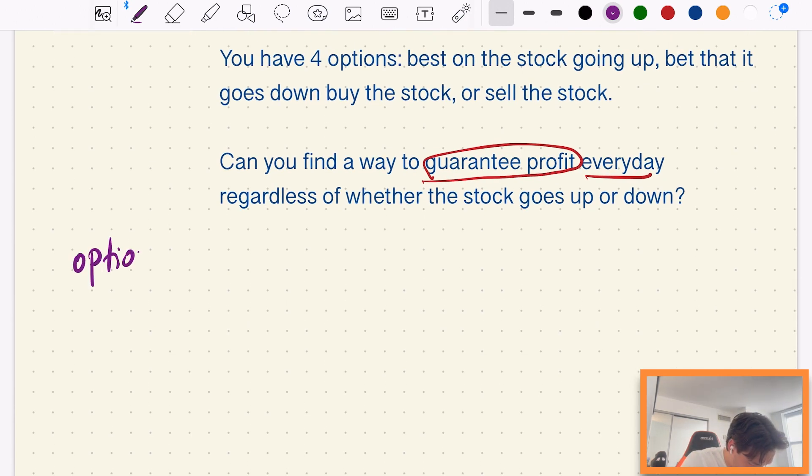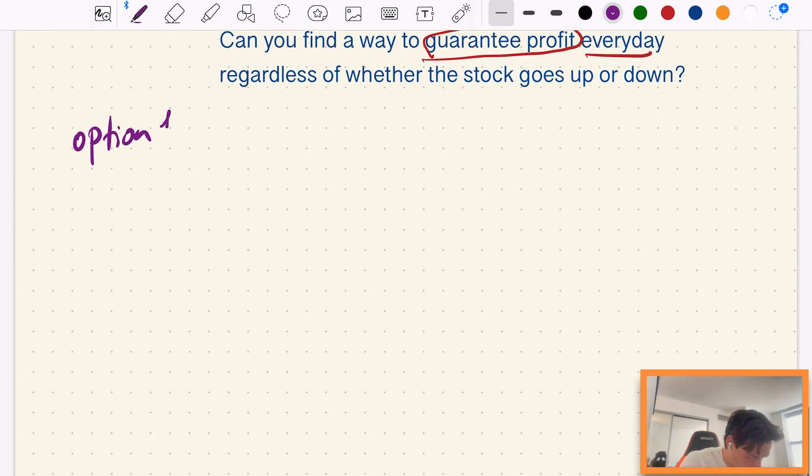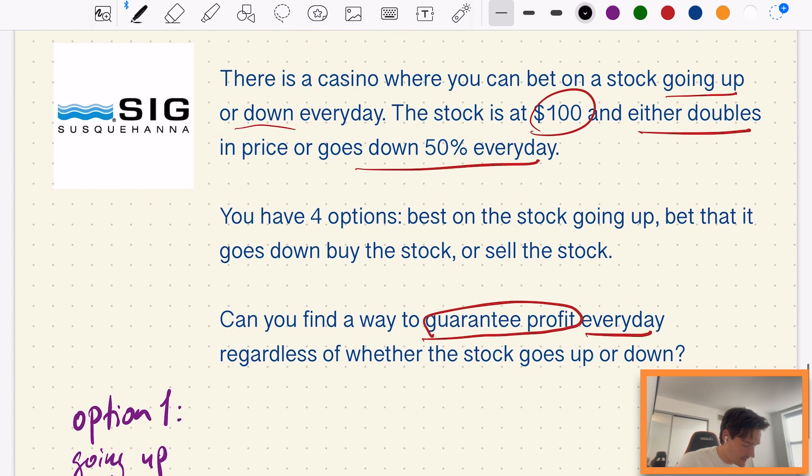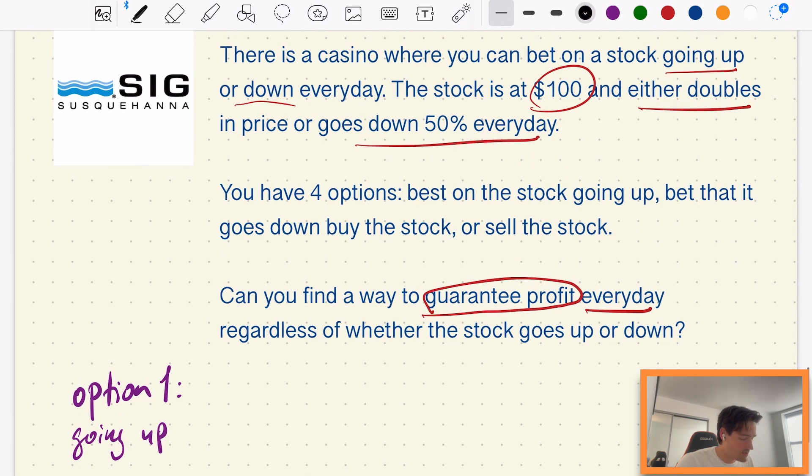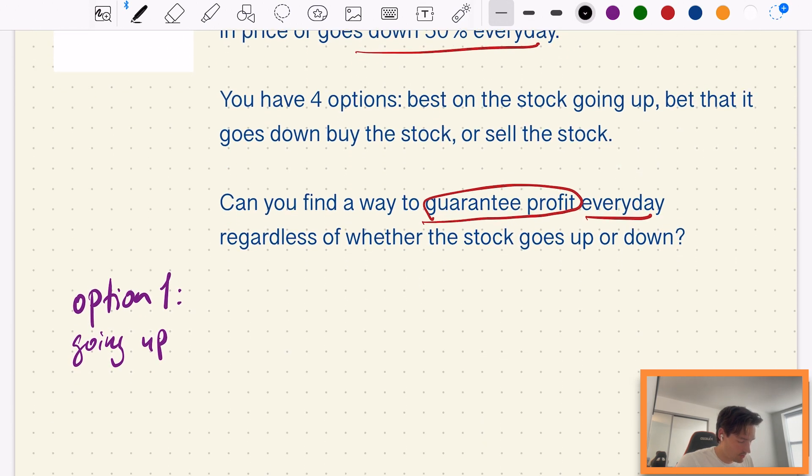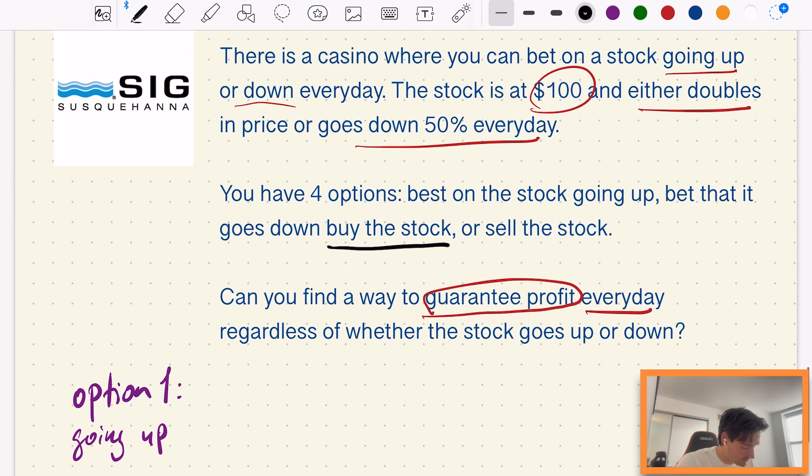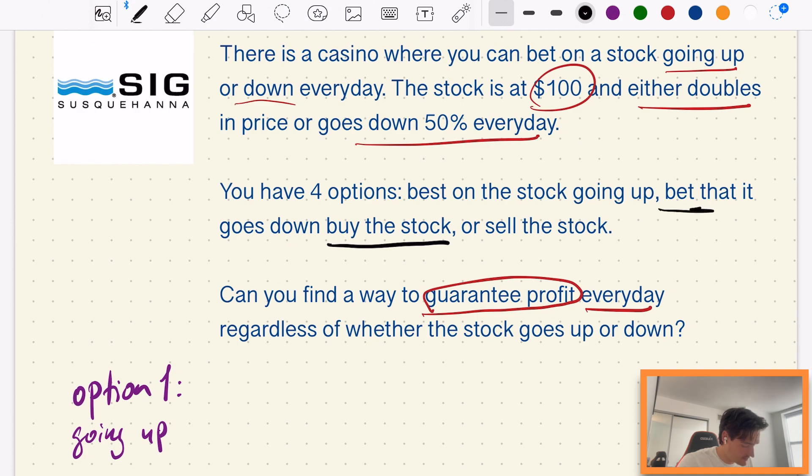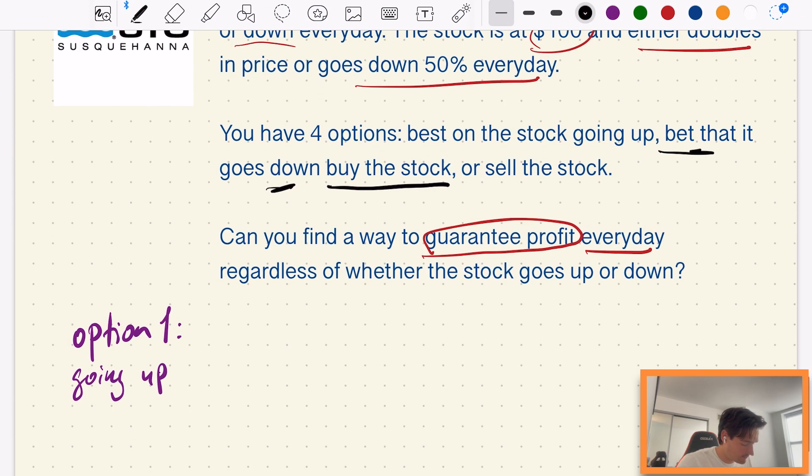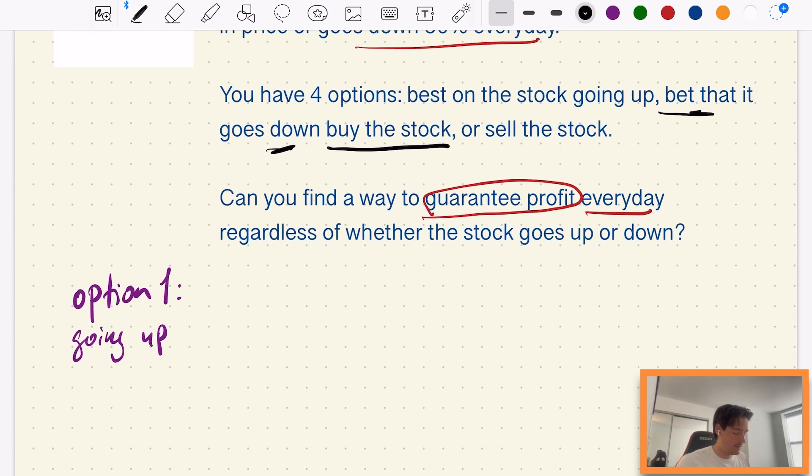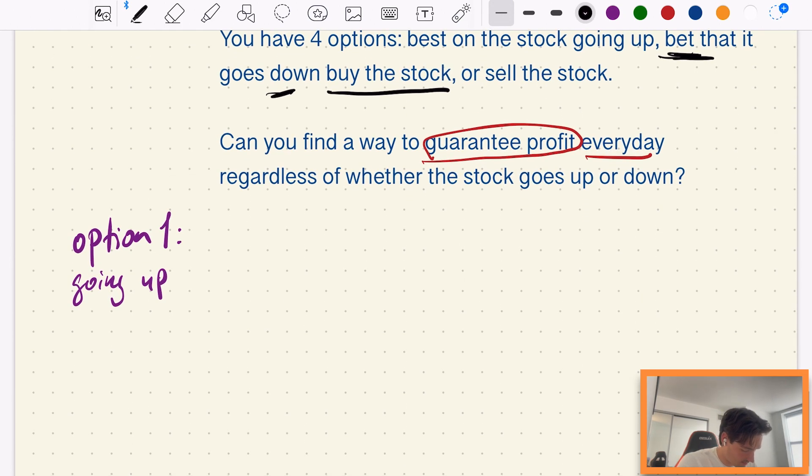Can you find a way to guarantee profit every day regardless of whether the stock goes up or down? Basically let's start with our two options: option one and option two, with option one being just what's happening in the situation. Off the bat I have an idea, we're going to try hedging owning the stock. So if we own the stock and then also bet on the stock going down, we're going to have basically two contradictory movements, not perfectly contradictory though because here we're betting on it and here we own the stock.